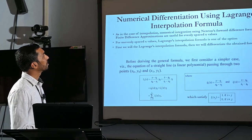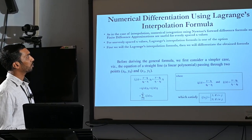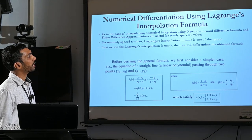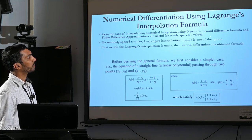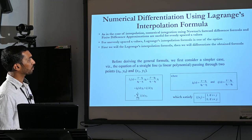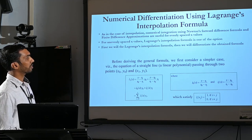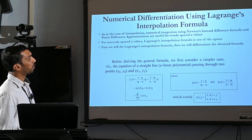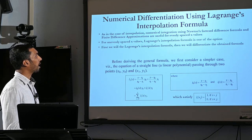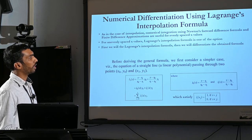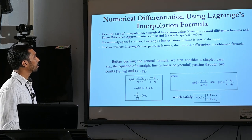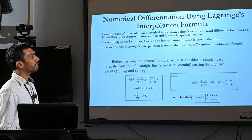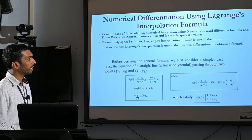Next, we will use Lagrange's interpolation formula for numerical differentiation. As in the case of interpolation, the numerical differentiation using Newton's Forward Formula and Finite Difference Approximation are useful only for evenly spaced x values. For unevenly spaced x values, Lagrange's formula is one of the options. First we find the Lagrange's interpolation formula, then we differentiate the obtained formula — that is the general approach.